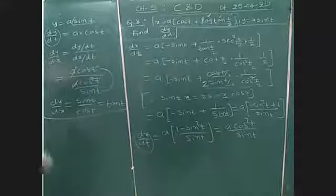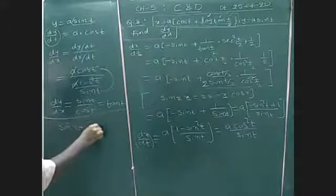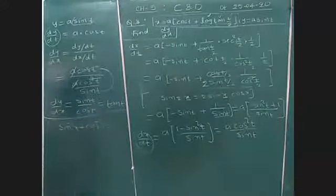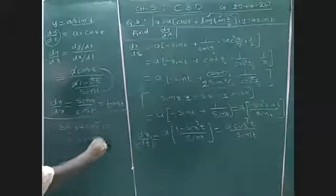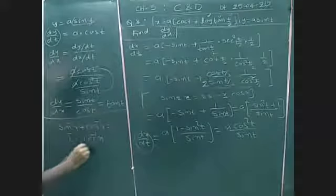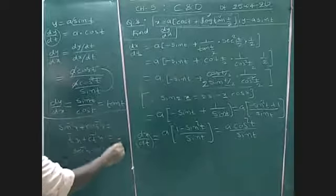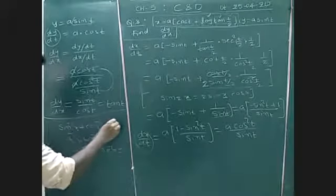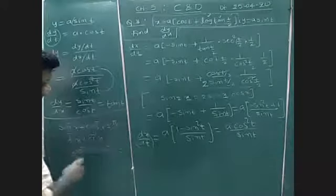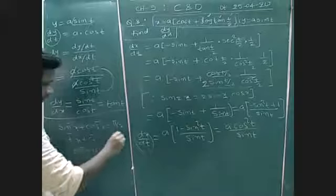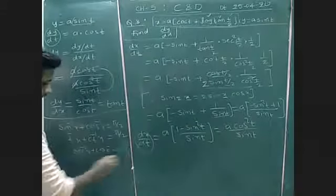Here I want to ask: what is the form of sin inverse x plus cos inverse x? Tan inverse x plus cot inverse x? Secant inverse x plus cosecant inverse x? What is this value? Sin inverse plus cos inverse is π/2. Tan inverse plus cot inverse is π/2. Secant inverse plus cosecant inverse is π/2.